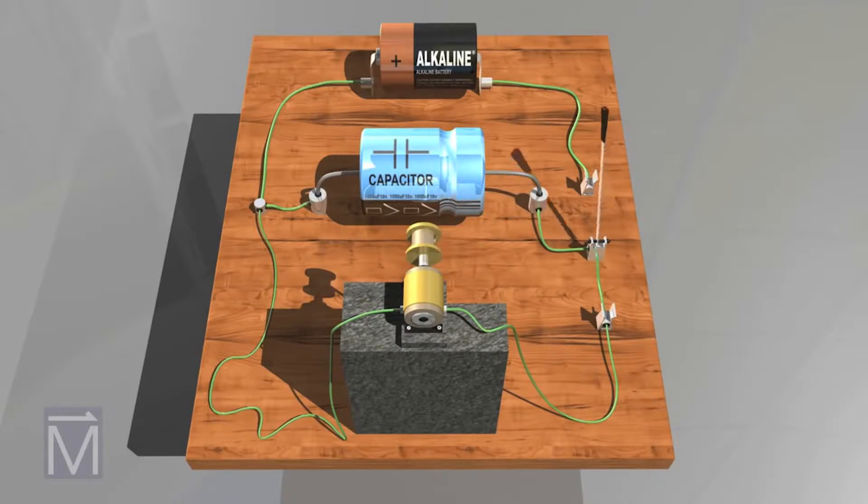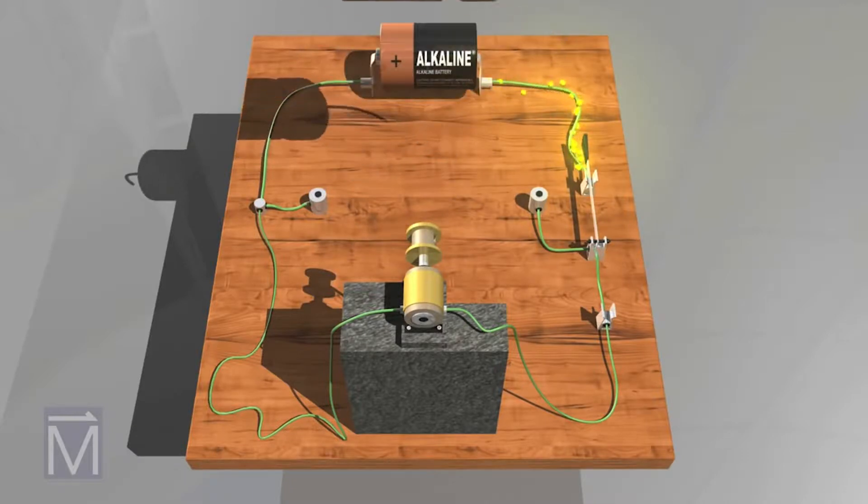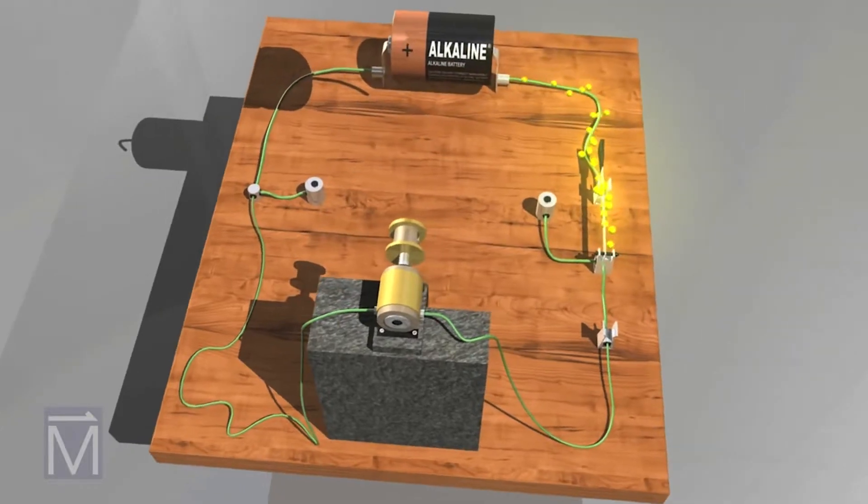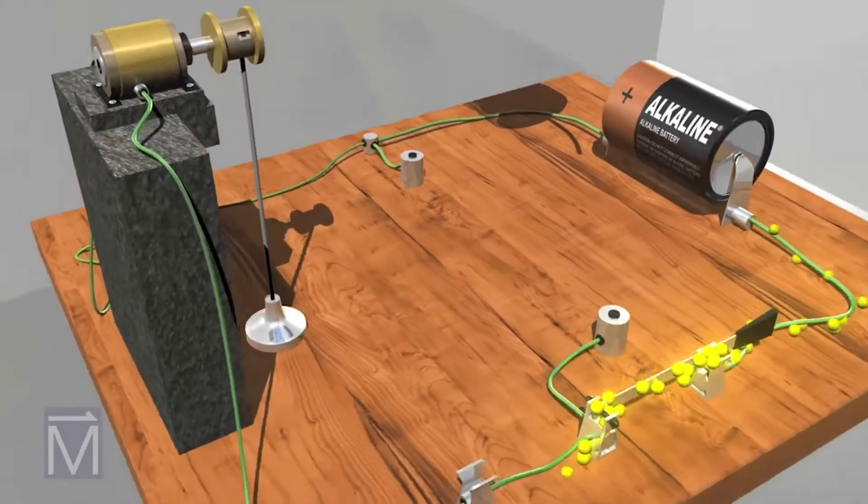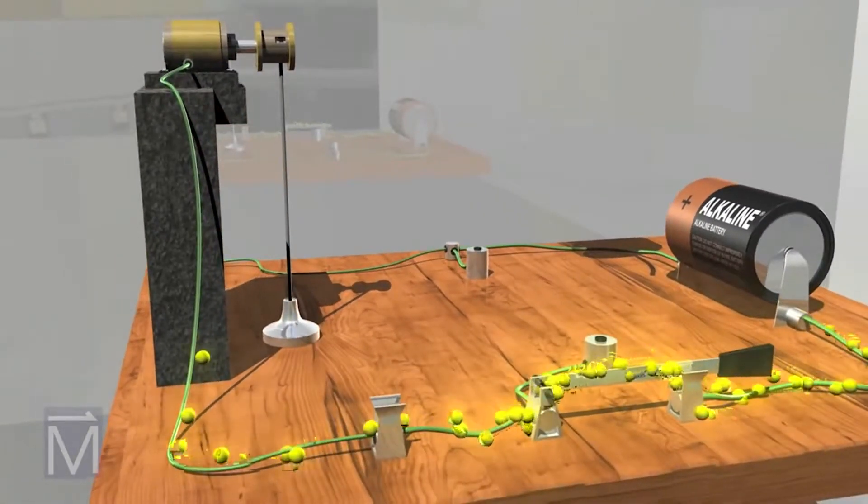When we close the switch, electricity immediately runs throughout the circuit. Although the convention is to think of electrical current as moving from positive to negative, electrons actually move from negative to positive, as we show here with yellow particles.